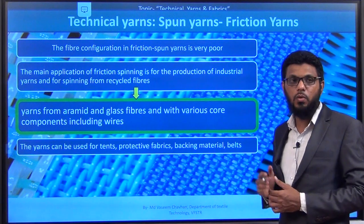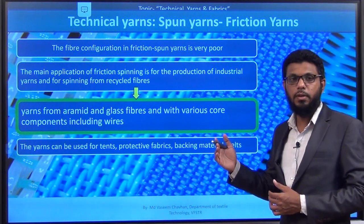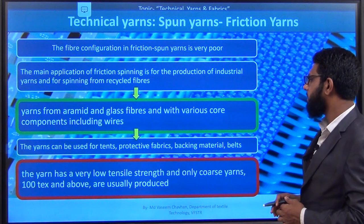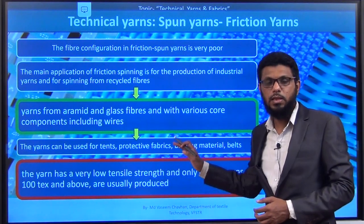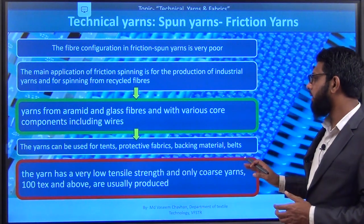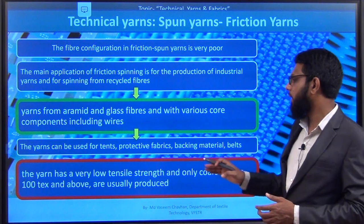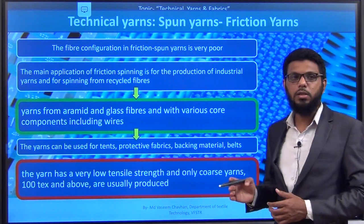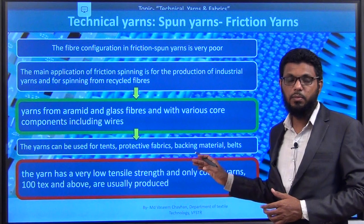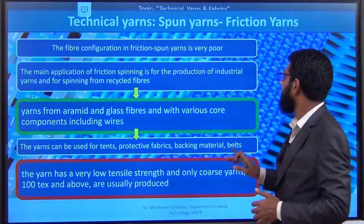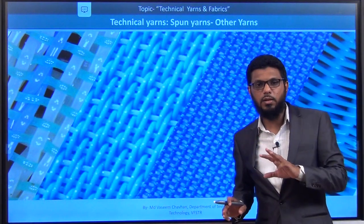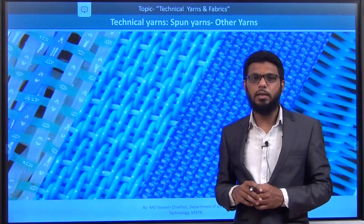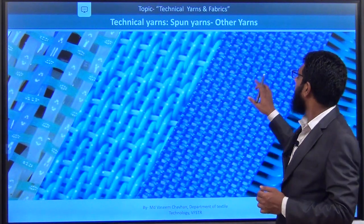The technologist has to decide the core component and the sheet component and how to use them accordingly. The yarn can be used for tight productive fabric, backing material, and various other applications. The disadvantage is that this yarn has very low tensile strength, and only coarser yarn up to 100 Tex or more can be obtained. Production is somewhat good, but the main disadvantage is poor strength. These are the three main spun yarn types that have scope in technical textile.